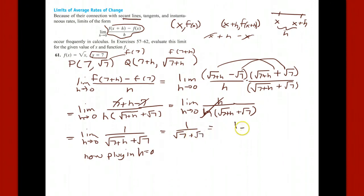Or 1 over 2√7. If you want to, you can rationalize that by multiplying by √7 over √7. That's √7 over 14. I like this answer—here's an alternative answer.